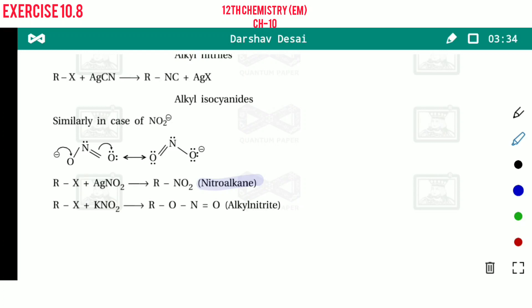But in the presence of KNO2, then oxygen acts as a nucleophile in the given structure, which you can see clearly. Oxygen has a lone pair of electrons. This one is called alkyl nitrite.